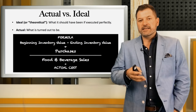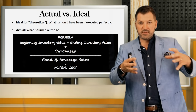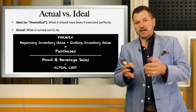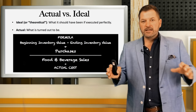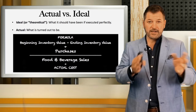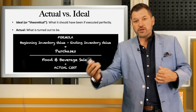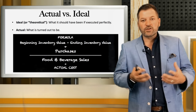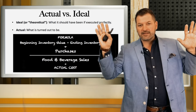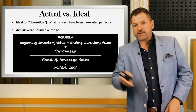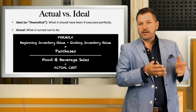Theoretical cost is my recipe — the amount of portions that go in to build this plate and how much each portion costs. I can come up with a plate cost for everything. If I executed that perfectly against all the sales I had on every item, my cost should come out to be whatever that multiplier is of all the product sold versus all the product bought and how much should have been used to execute those recipes. That's theoretical or ideal cost.